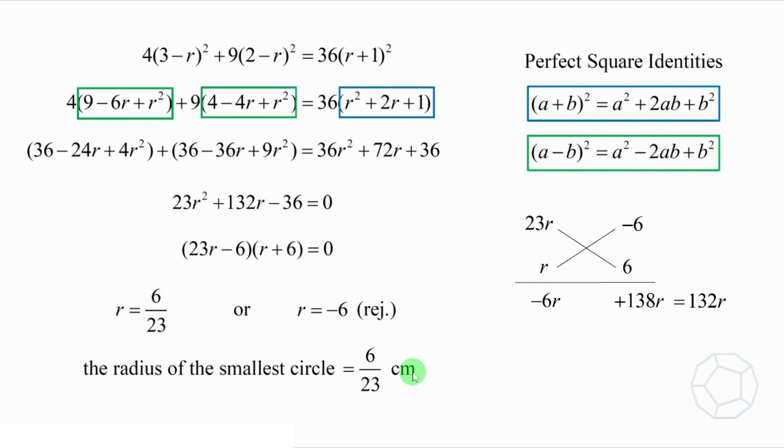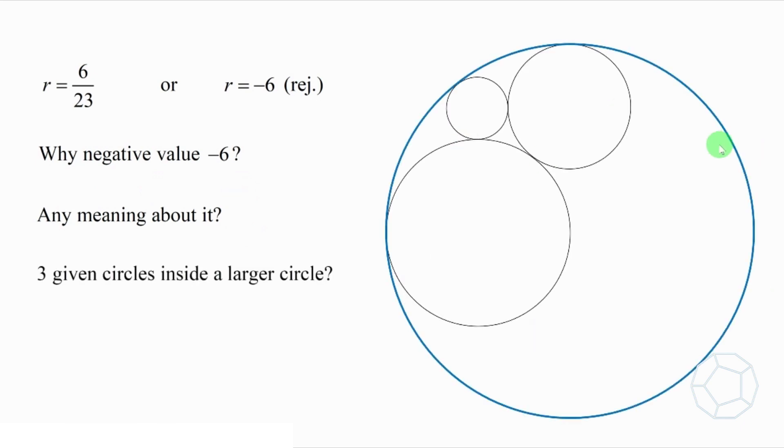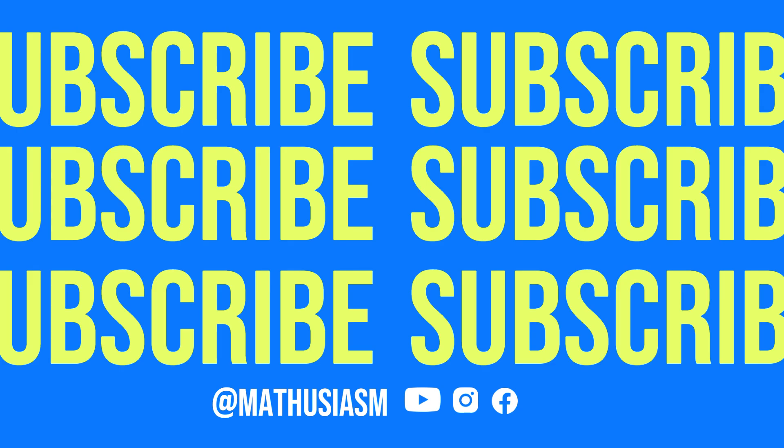But here, we have two questions. The first one is, how come we get a negative value? Is there any meaning about it? The second one is, what about the three given circles are inside a larger circle, but still, they are sort of kissing each other? What's the radius of that big circle? It turns out that we can answer all these questions at the same time. You may want to check out the answer in the next episode, or other changing geometry questions in this channel. See you then!